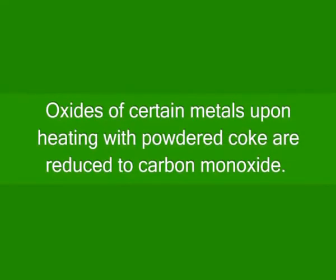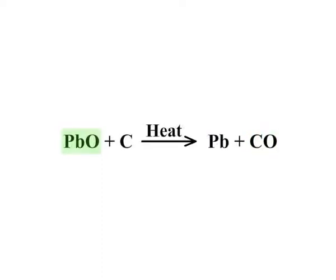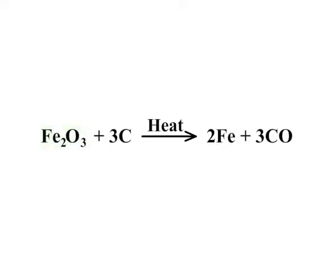Carbon monoxide can be prepared by passing carbon dioxide through red hot charcoal. It is a reversible reaction. Oxides of certain metals upon heating with powdered coke are reduced to carbon monoxide. Zinc oxide when heated with carbon forms zinc and carbon monoxide. Lead oxide reacts with carbon when heated to form lead and carbon monoxide.